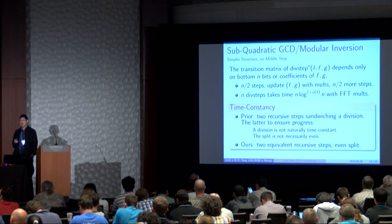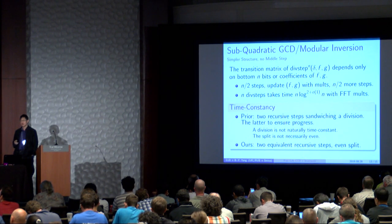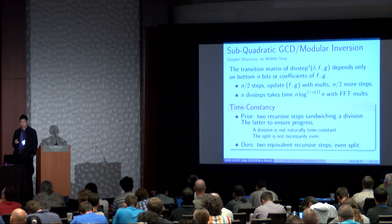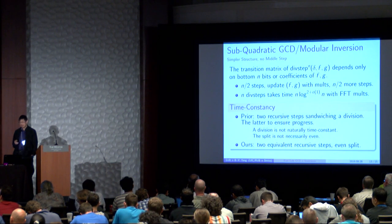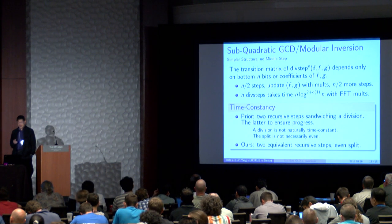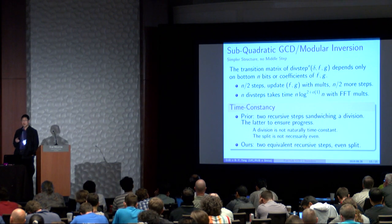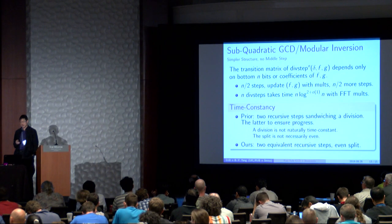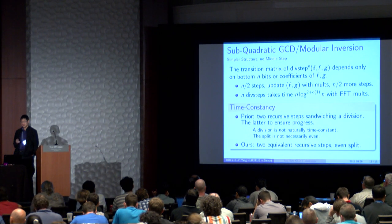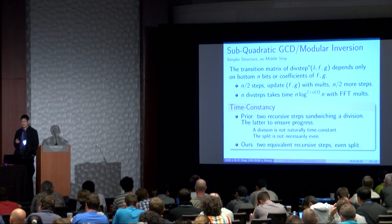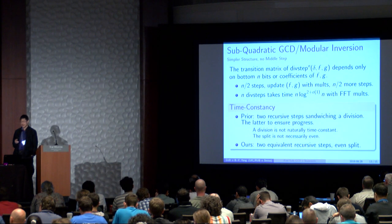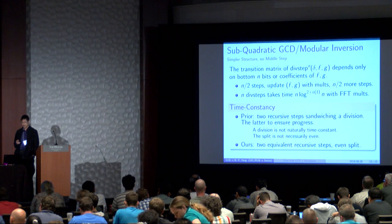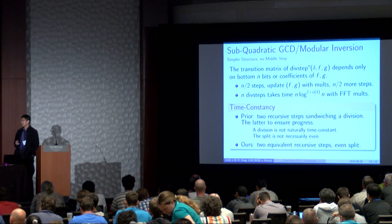And then we do half of the remaining steps. And the remaining half of the steps. And the result when we do this recursively is that the N divsteps takes time N times log squared plus small o of one N when using FFT multiplication. So this is time constant.